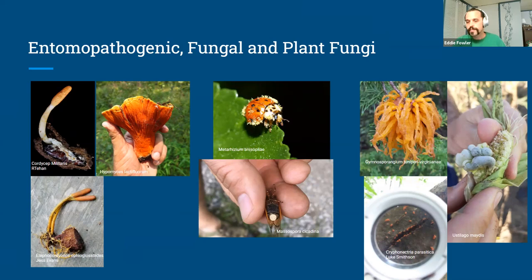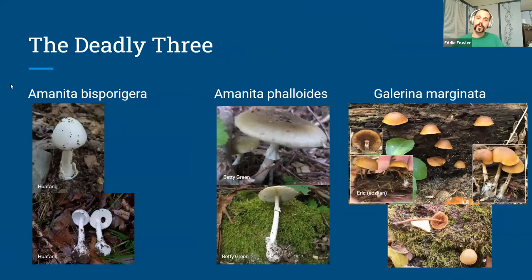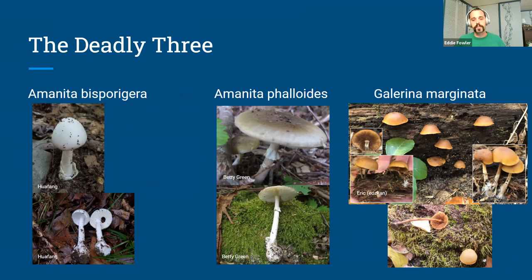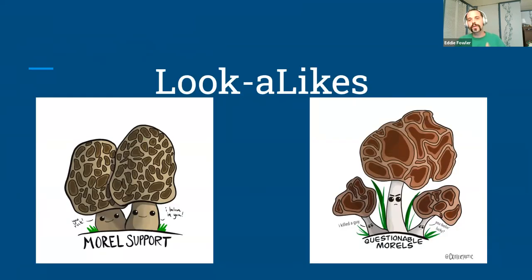Even though I said we wouldn't talk about edibility, it's still important if you're getting into the field to know that there are mushrooms deadly for humans to consume. Three examples are Amanita bisporigera, Amanita phalloides, and Galerina marginata. These mushrooms will actually cause liver and kidney failure in humans. If you have kids or dogs in your yard, you want to keep them from consuming these species.